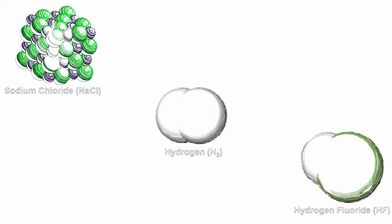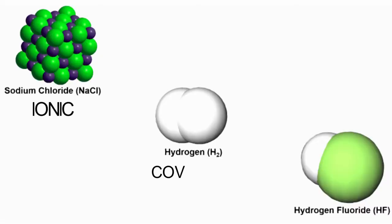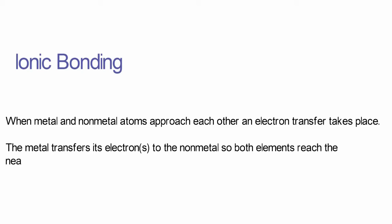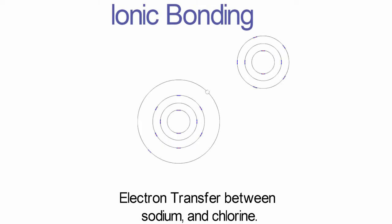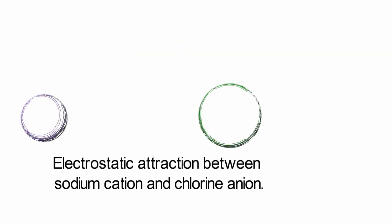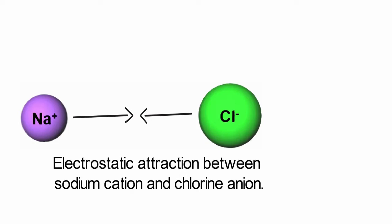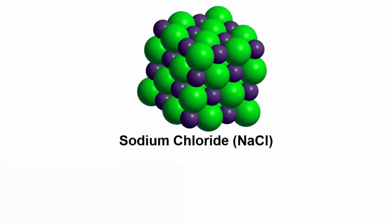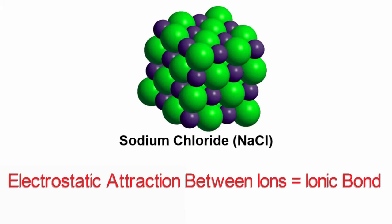There are different classes of chemical bonding. In this presentation, we will be talking about ionic, covalent, and polar covalent bonding. An ionic bond is generally formed between metals and nonmetals. When metal and nonmetal atoms approach each other, an electron transfer reaction takes place — the metal transfers one or more electrons to the nonmetal so both atoms reach the nearest noble gas configuration. This example shows a sodium atom transferring an electron to a chlorine atom. The resulting charged ions are attracted to each other due to electrostatic forces, forming the ionic solid sodium chloride, commonly known as table salt. Simply put, ionic bonding is the electrostatic attraction between positive and negative ions.